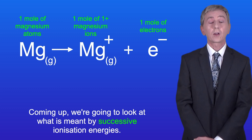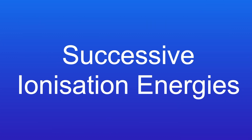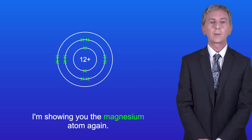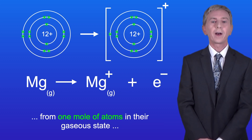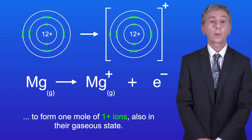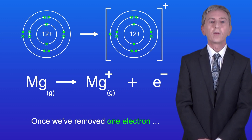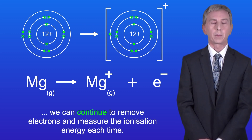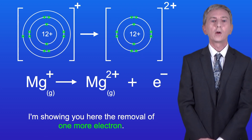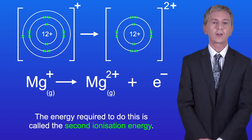Coming up we're going to look at what is meant by successive ionization energies. As we saw, the first ionization energy involves removing one mole of electrons from one mole of atoms in their gaseous state to form one mole of 1+ ions also in their gaseous state. Now once we've removed one electron we can continue to remove electrons and measure the ionization energy each time. The energy required to remove one more electron is called the second ionization energy.